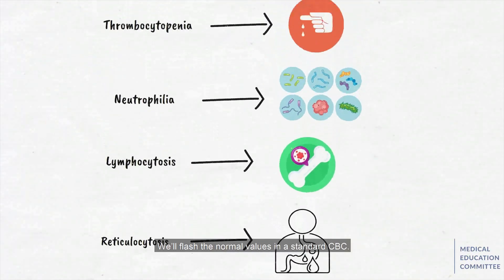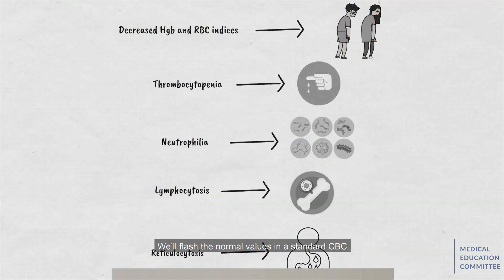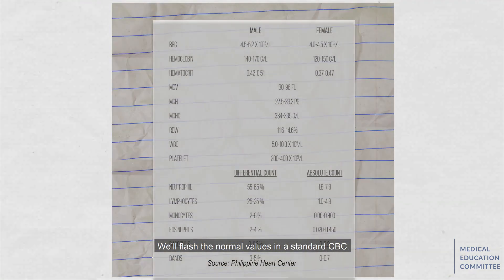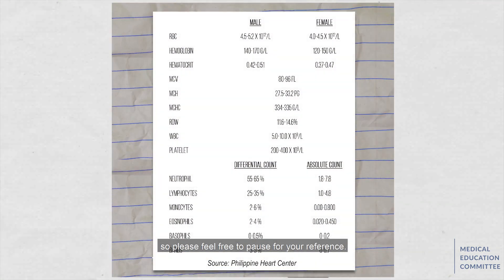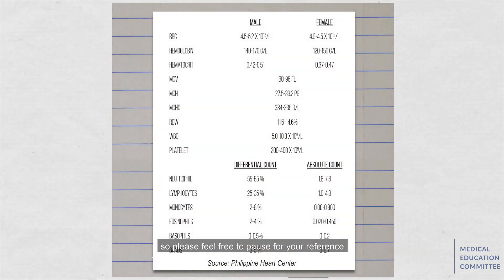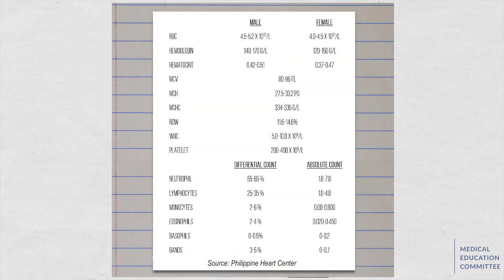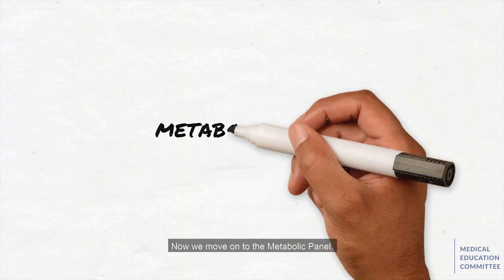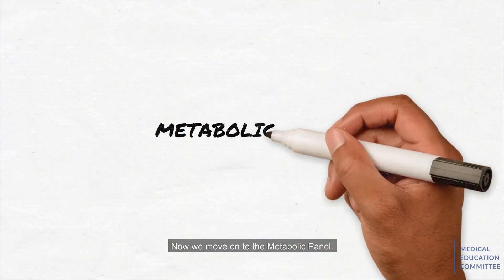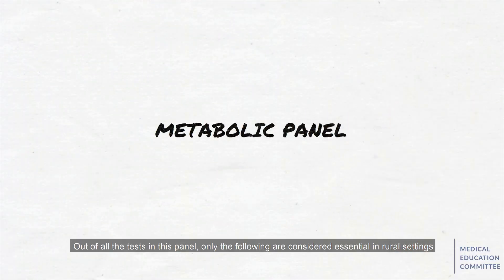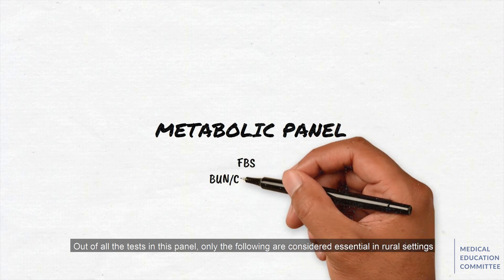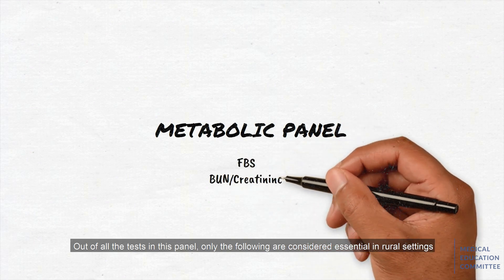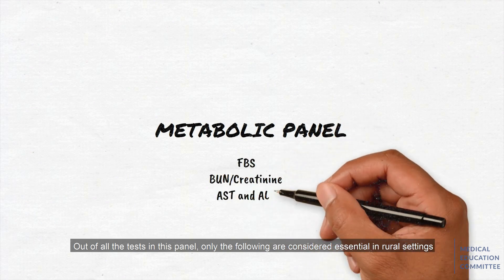We'll flash the normal values in the standard CBC, so please feel free to pause for your reference. Now we move on to the metabolic panel. Out of all of the tests in this panel, only the following are considered essential in rural settings.